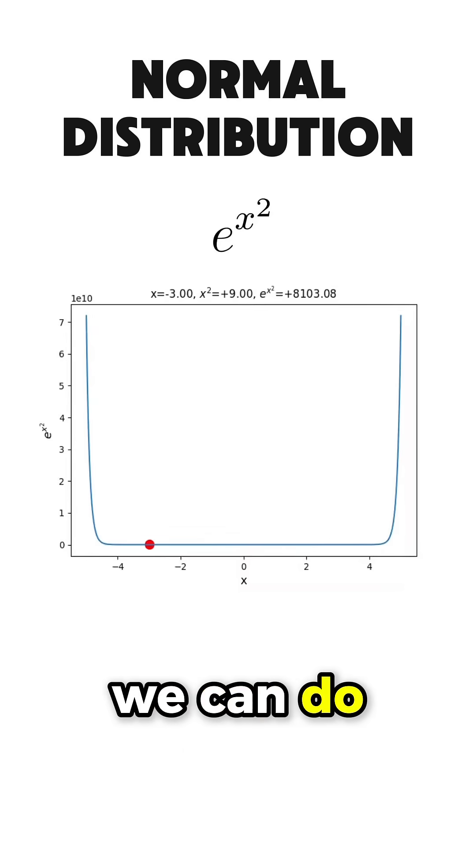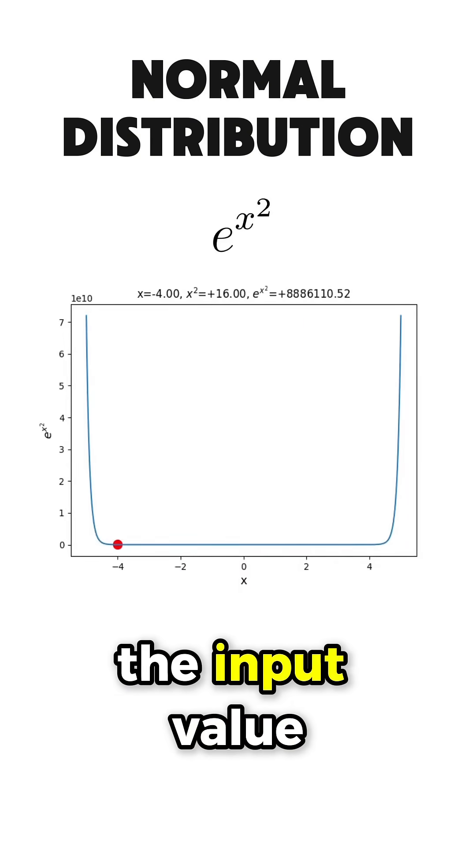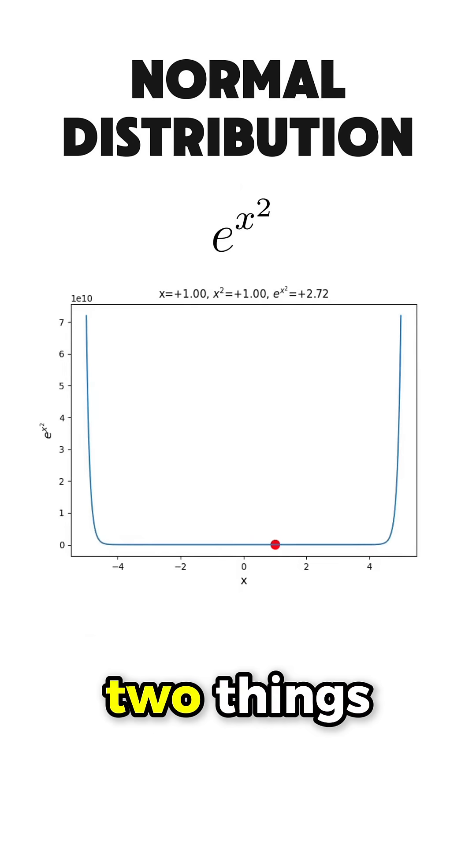Another thing that we can do that brings us closer to the definition of the normal distribution is to compute the square of the input value. This operation attains two things.